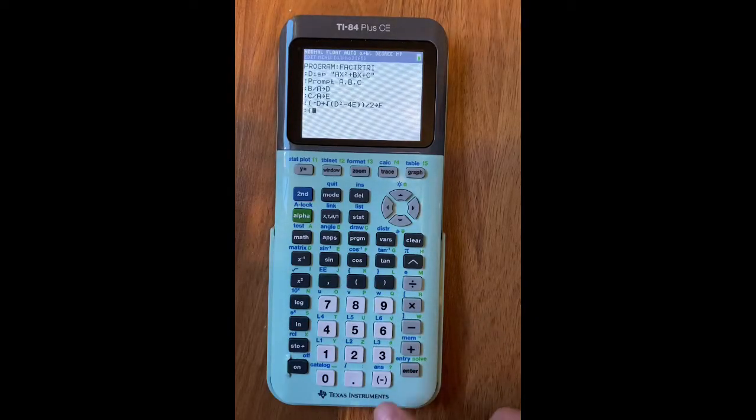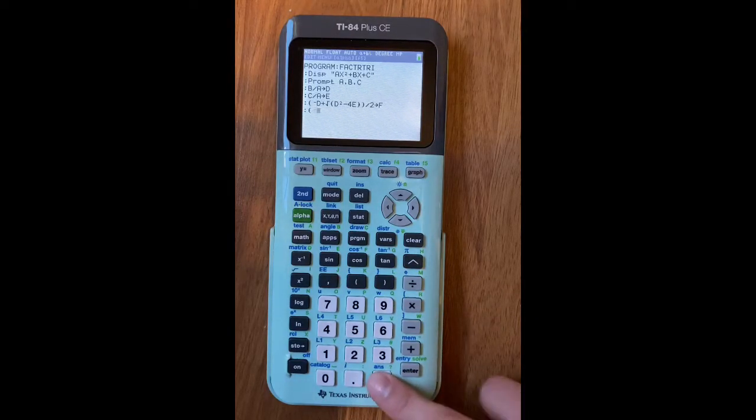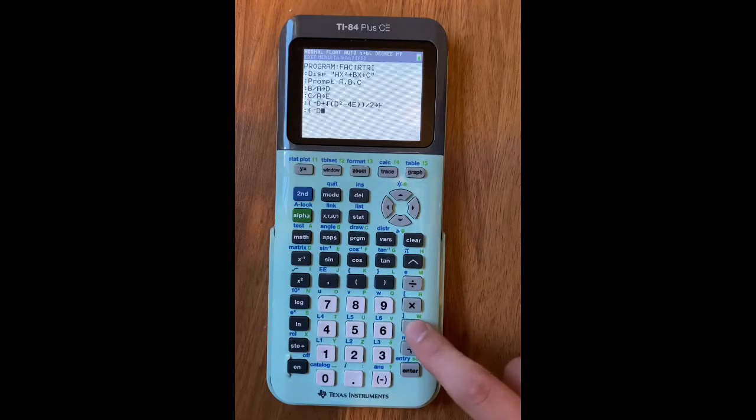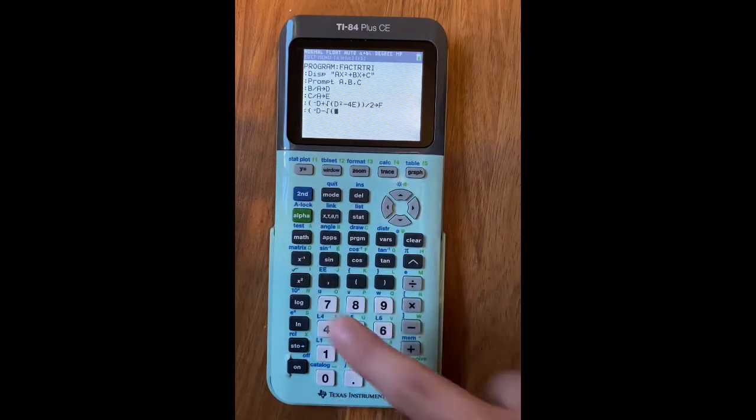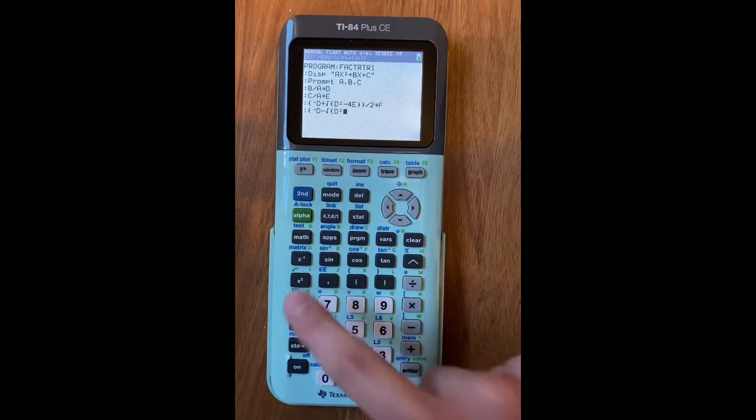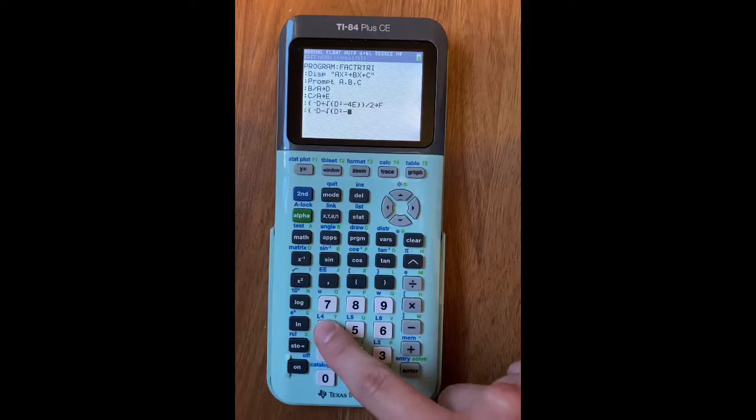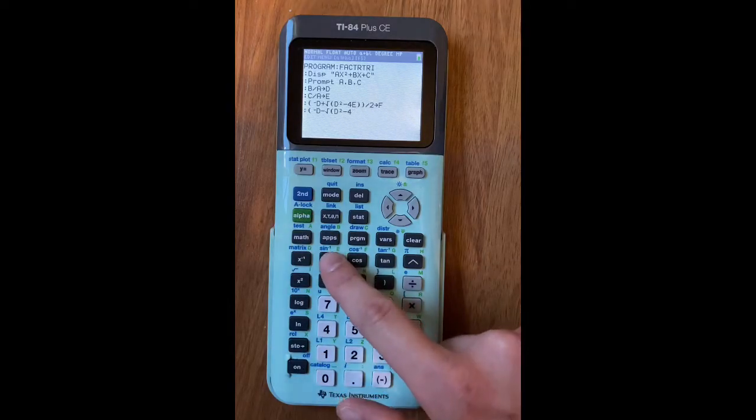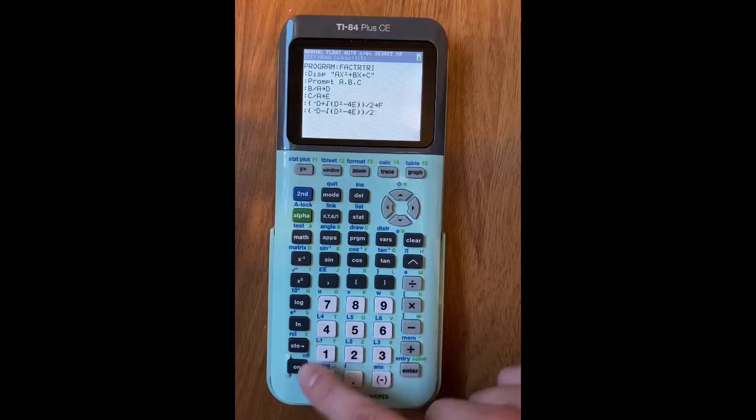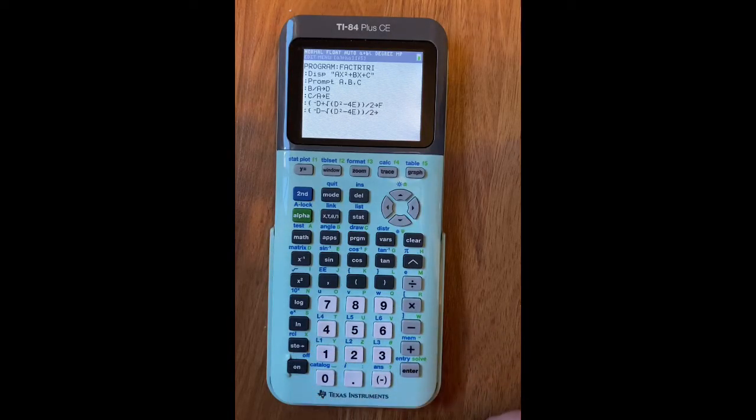Now it's almost the exact same thing. You're going to do a parenthesis, and then negative D, but instead of a plus, you're going to have a minus. And then square root D, squared, minus 4E, two close parenthesis, divided by 2, stores as G.